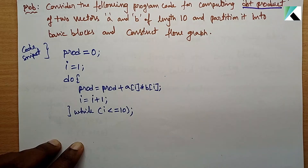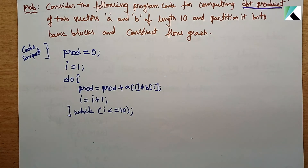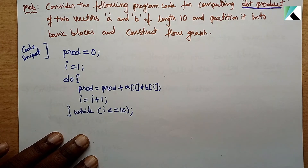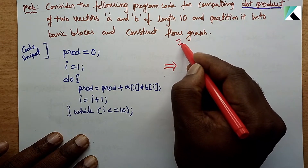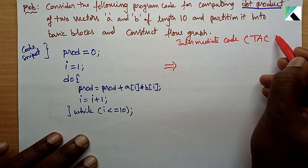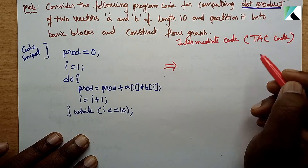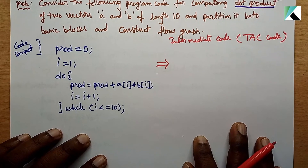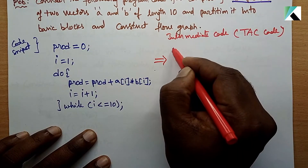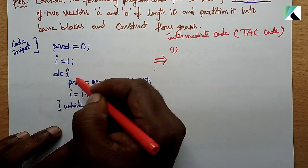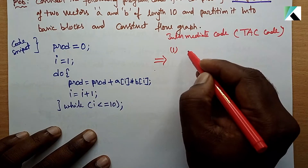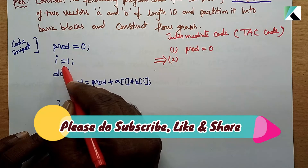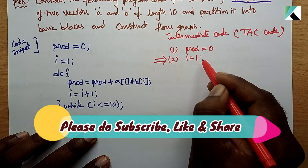Now we generate the intermediate code. Statement 1: prod = 0. Statement 2: i = 1. These initialize the product accumulator and the loop index.